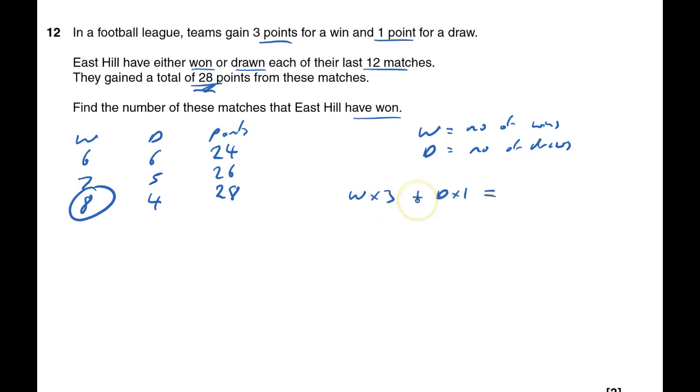Plus my number of draws times by one, and that must equal my total number of points, 28. And I also have, I know that numbers of wins plus the numbers of draws must equal how many matches there were, 12, because they didn't lose anything. We don't normally write it down like that, so I'm going to write the first one down like we normally would. 3w plus d equals 28.